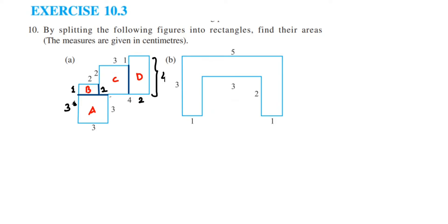We divide the figure into three rectangles: this will be A, this will be B, and this will be C. B and C are the same shape, so you don't have to calculate twice — they'll have the same area. This side is 1, and this other side is 2.